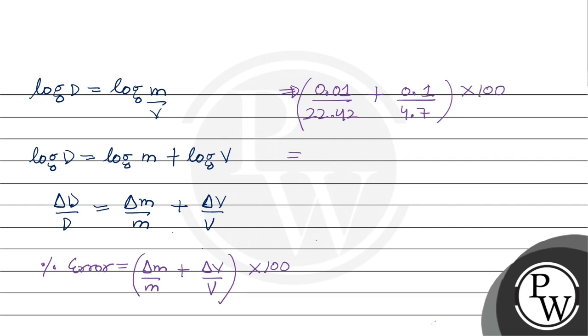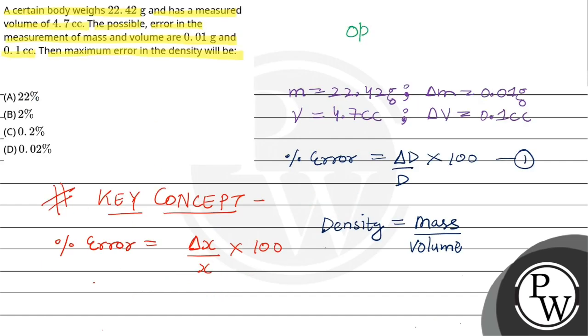When we calculate, we get 0.02 into 100. So the percentage error or the maximum error in density comes out to be 2 percent. The correct answer is option B. The maximum error in the density will be 2 percent. Hope you understood it well.